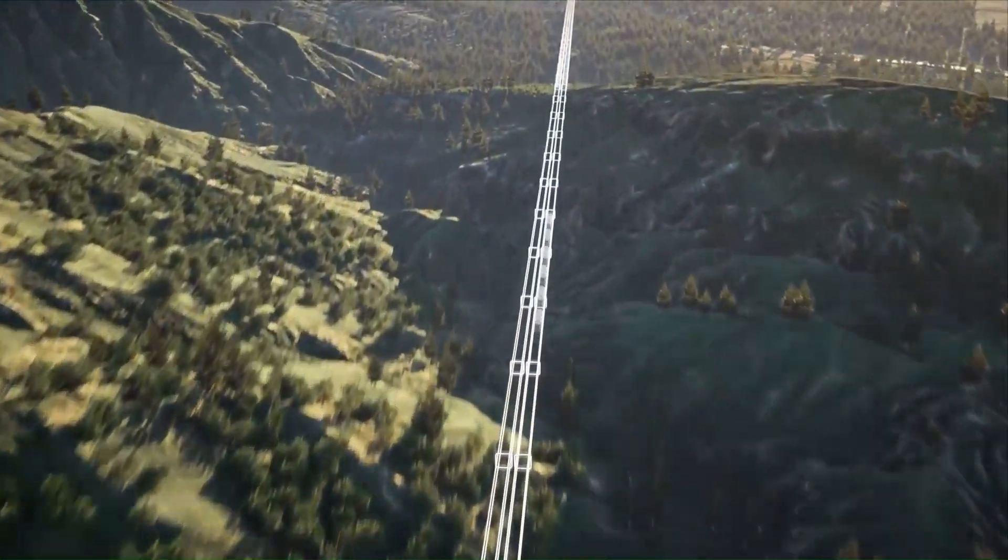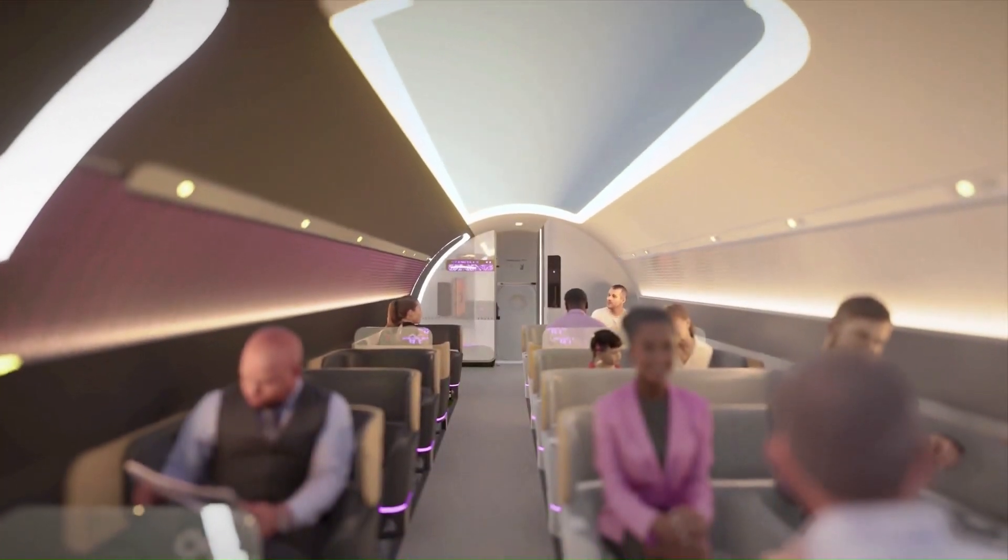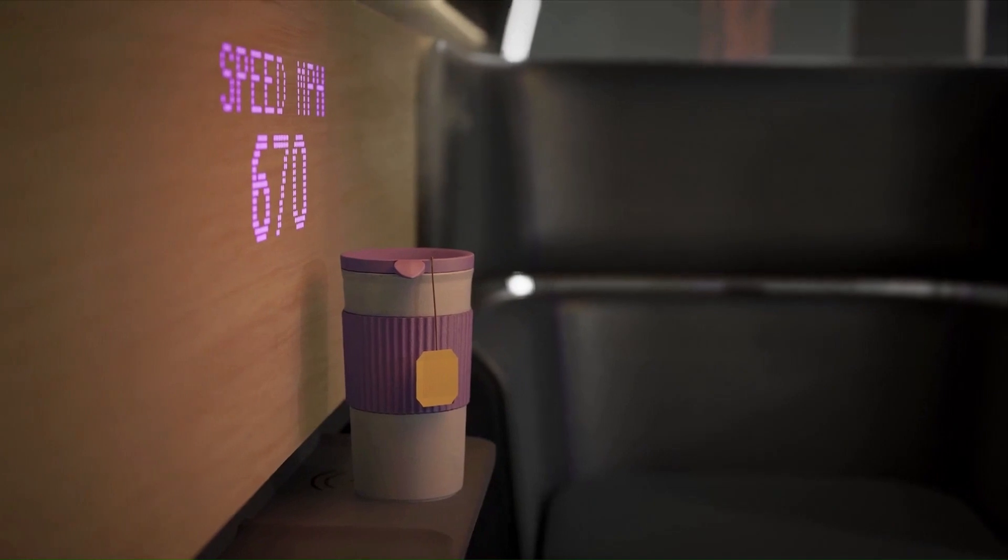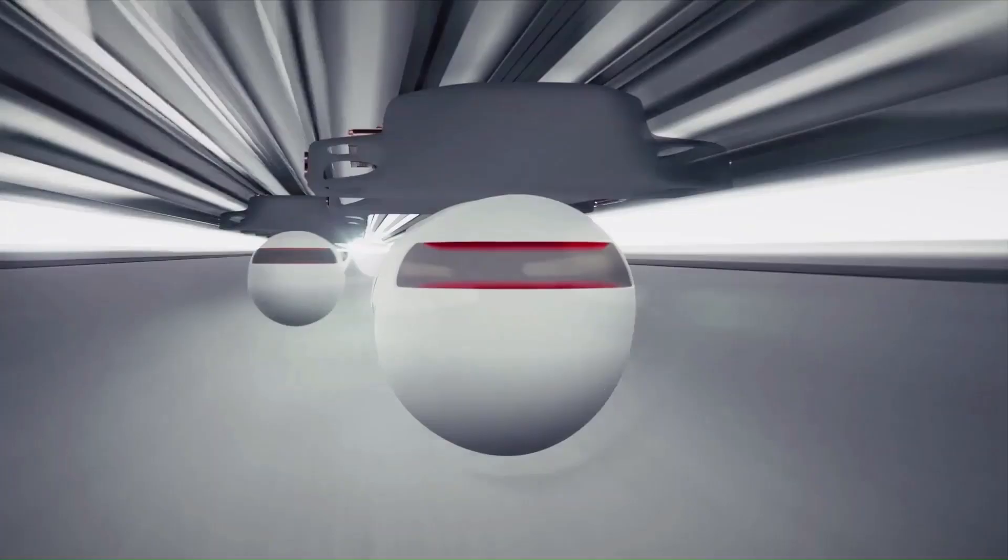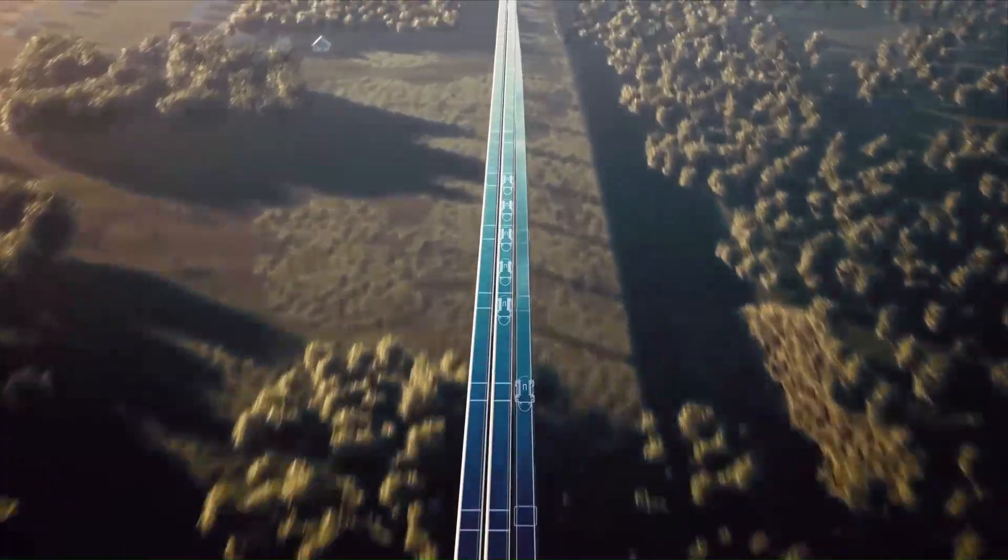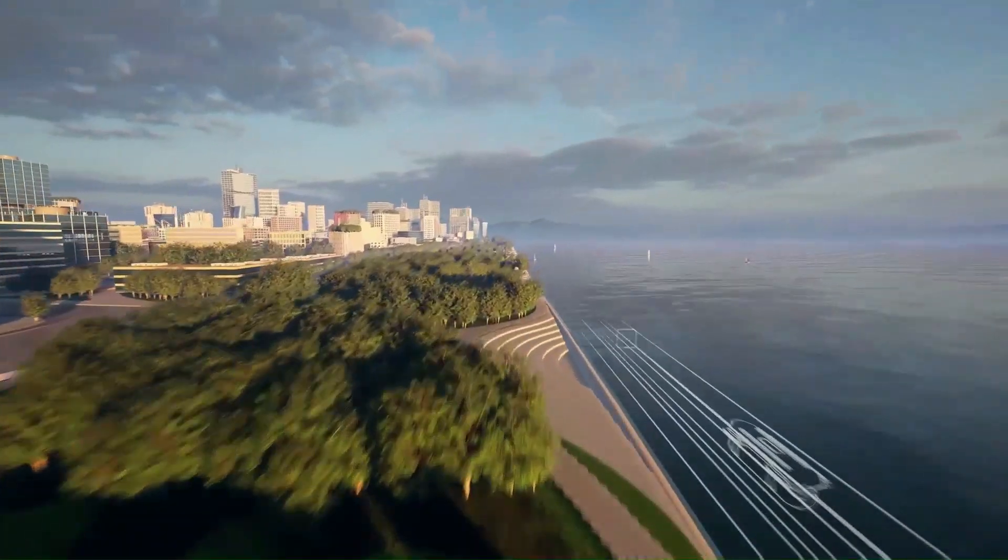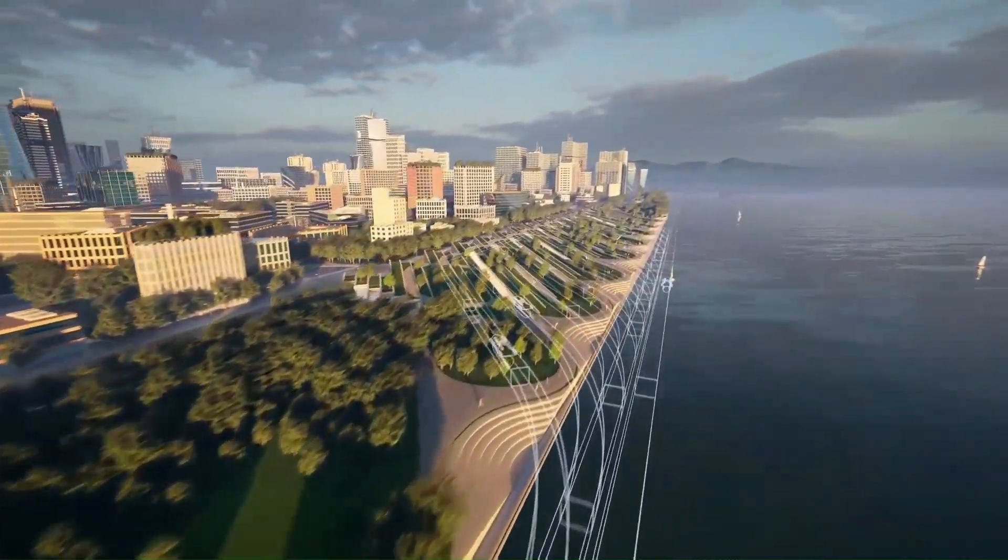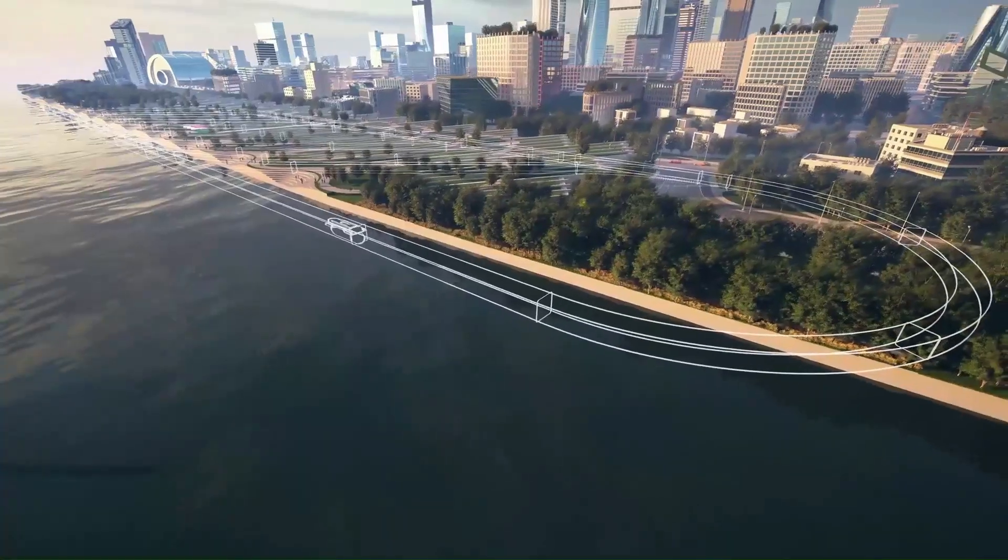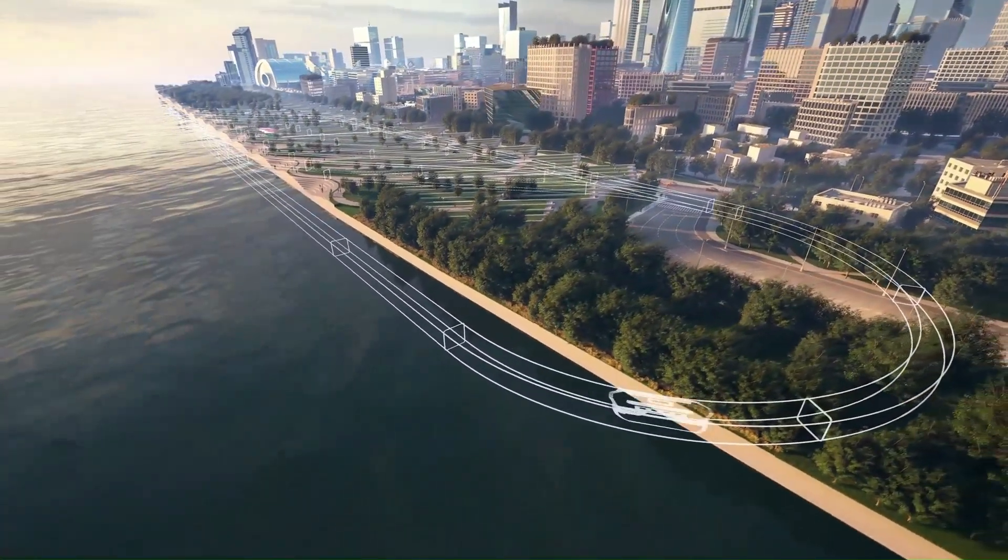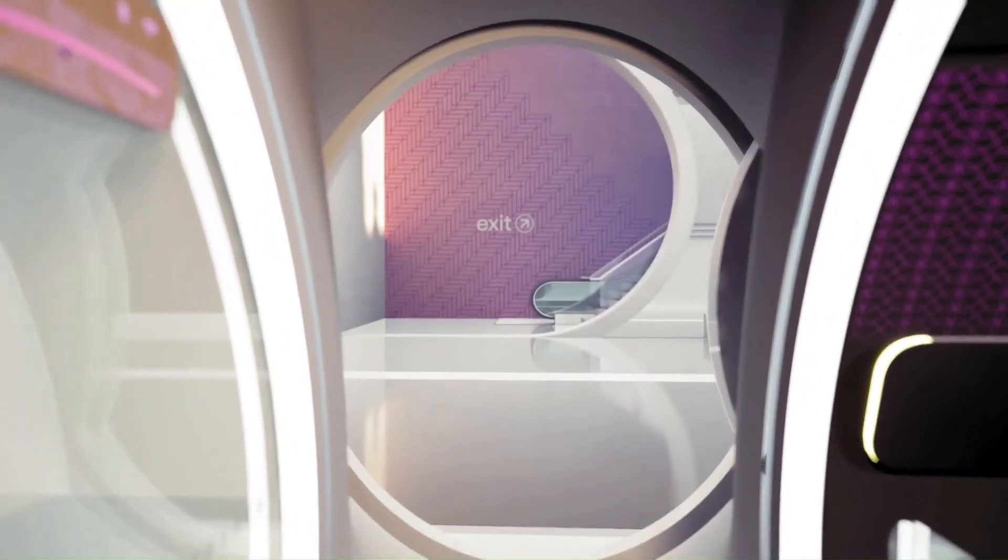The vehicle would glide silently at speeds up to 760 miles per hour, 1,223 kilometers per hour, with very low turbulence. The system is proposed to be entirely autonomous, quiet, direct-to-destination, and on-demand. As it is proposed to be built on columns or tunneled underground, it would eliminate the dangers of at-grade crossings and require smaller rights-of-way than high-speed rail or a highway.